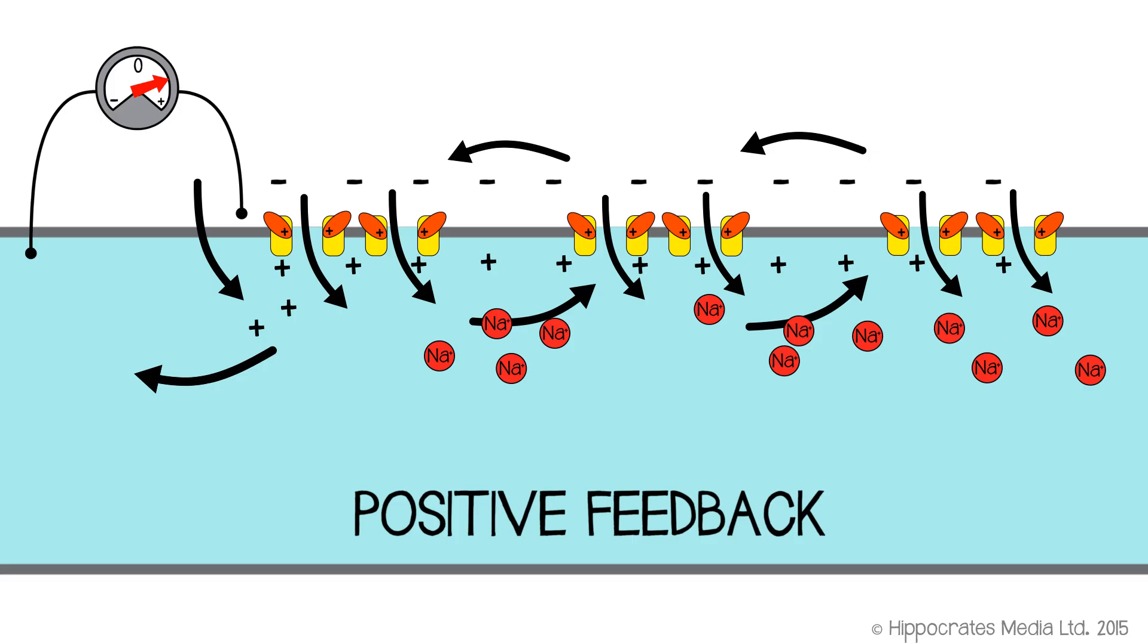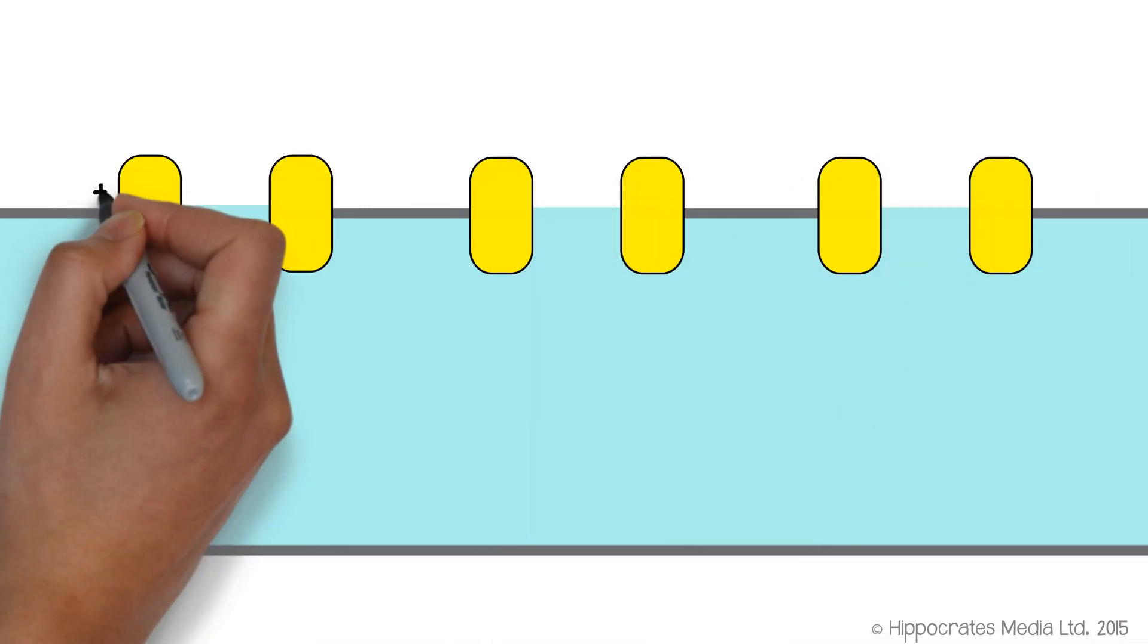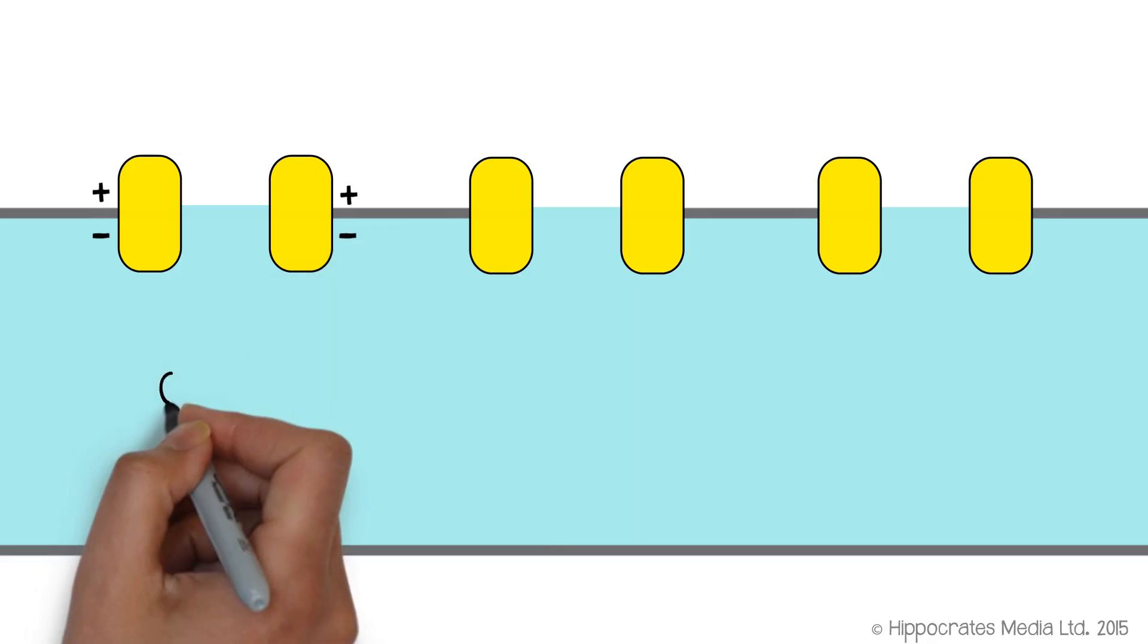And as a result, the membrane will rapidly become more positive in the interior. It will rapidly depolarize. And this is the upward phase of the action potential, the rising phase of the action potential, as the interior of the cell becomes more and more positive.